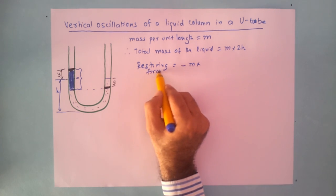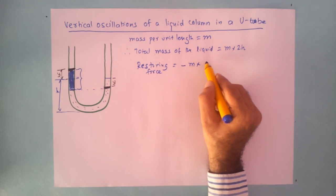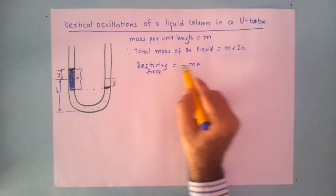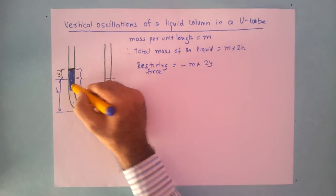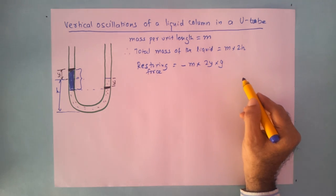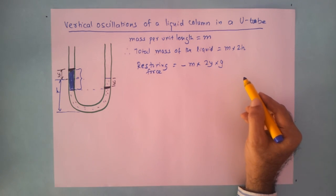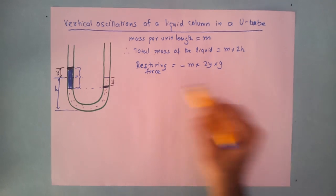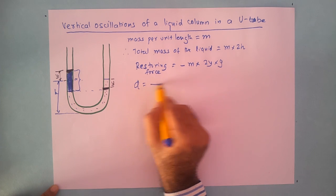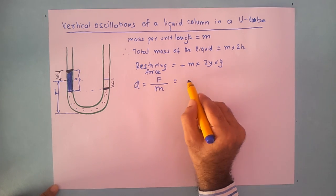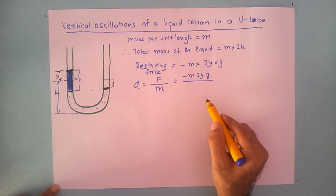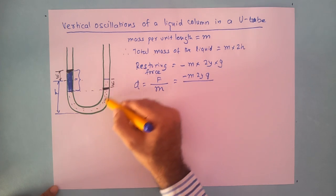The restoring force equals minus m into 2y into g. This is because the extra column height is y on one side and y on the other, giving a total of 2y. So the restoring force acting in the downward direction is minus m times 2y times g. The acceleration equals force upon mass, where the restoring force is -m·2y·g acting on the entire liquid column.